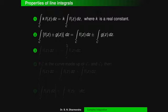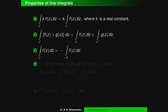Property 3 — ∫_C f(z)dz = −∫_{−C} f(z)dz. When we interchange the upper and lower limits, a minus sign appears. Changing from A to B becomes B to A, giving ∫_{−C} f(z)dz with a negative sign.